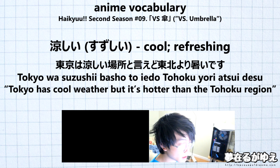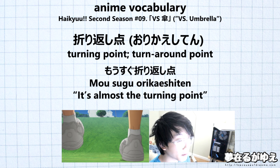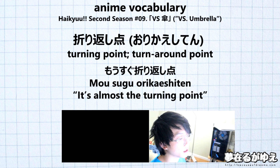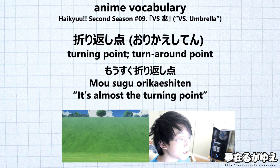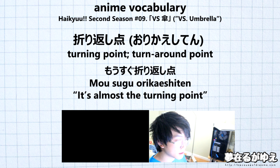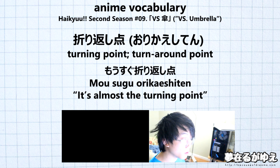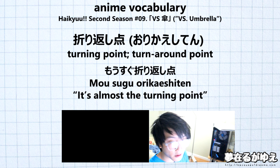For our next vocabulary word we have ori kaisiten, and what this word means is 'turning point' or 'turnaround point.' For our example sentence we simply have 'ori kaisiten,' which will translate to 'it's almost the turning point.' Breaking it down, it consists of two parts: ori means 'almost,' and then the actual vocab word ori kaisiten means 'turning point.' Combine those two and it means 'almost the turning point,' or more naturally, 'it is almost the turning point.'